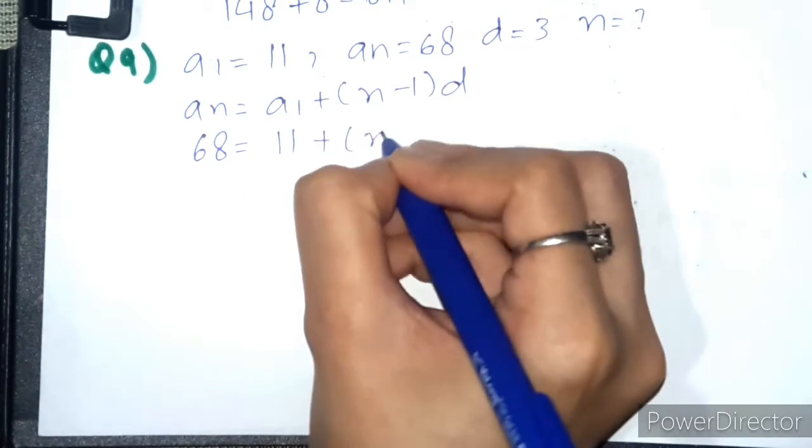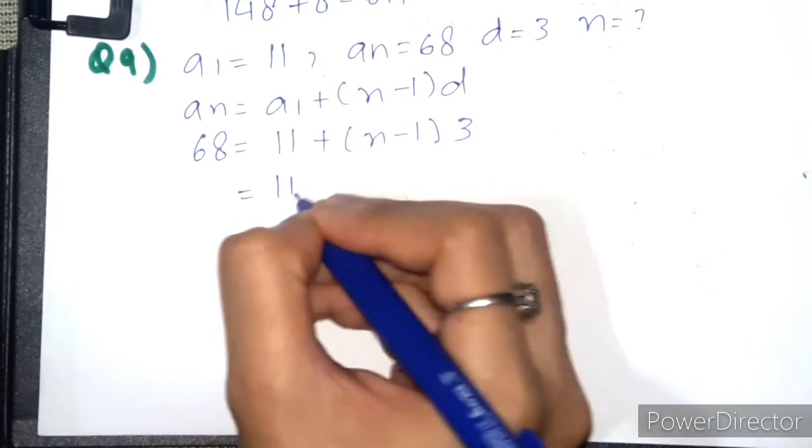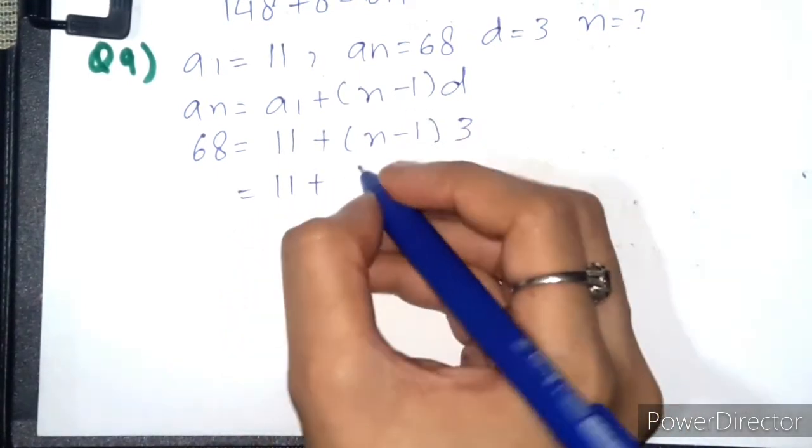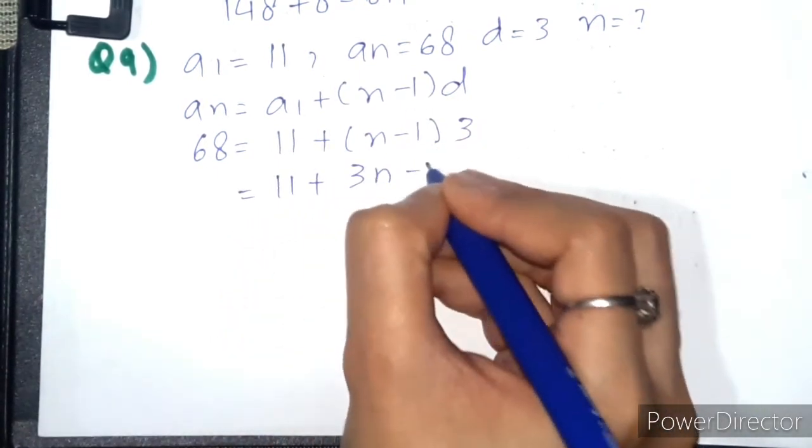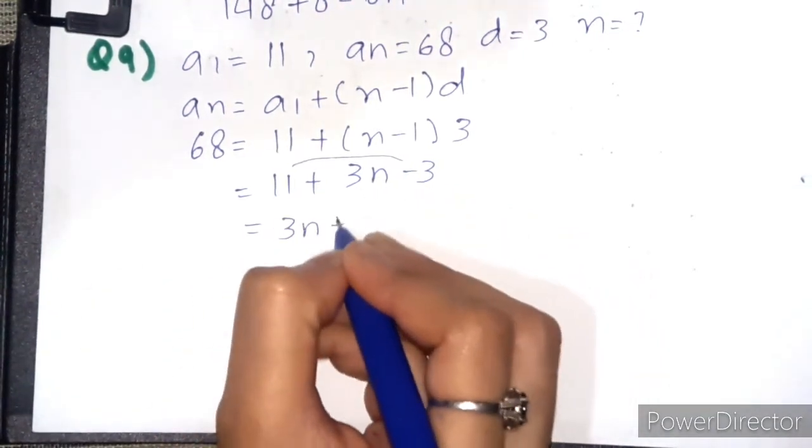Here we have 11 plus 3 multiplied into (n - 1), which gives us 3n - 3. So this becomes 3n + 8. Here this plus will become negative.